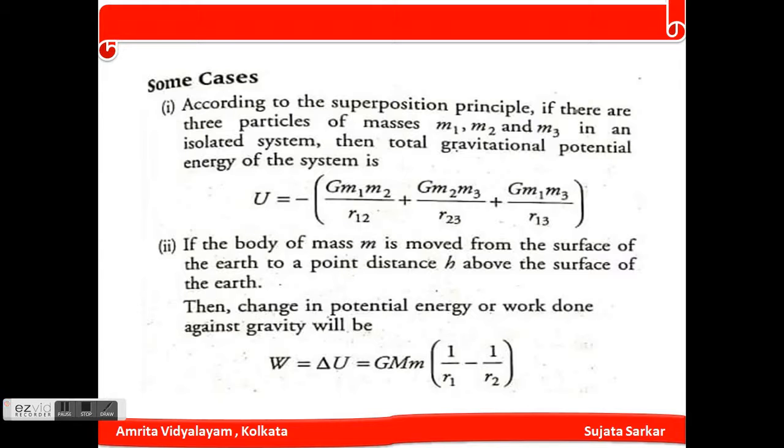So if the mass is moved from the surface at r to a point at distance h above the surface, we can say that W equals delta U or GMm times 1 by r1 minus 1 by r2.